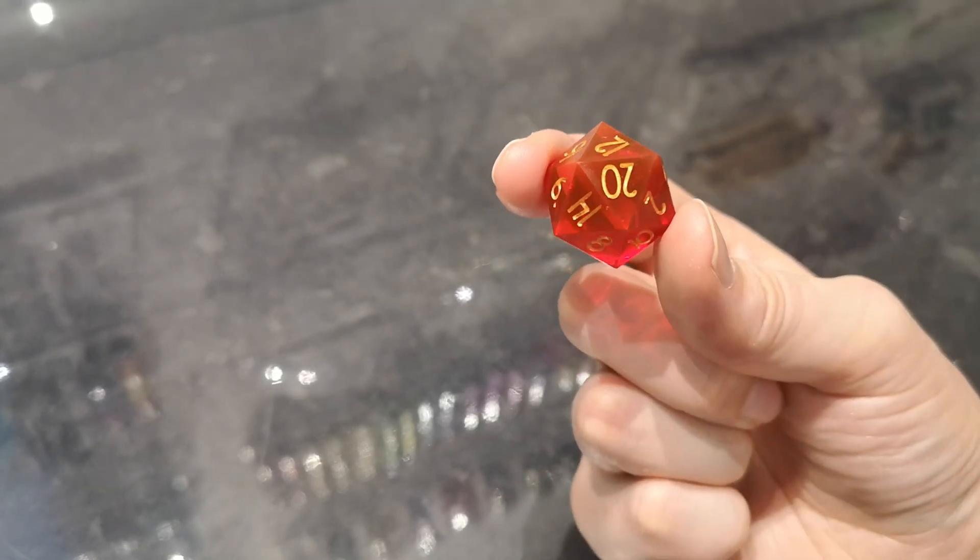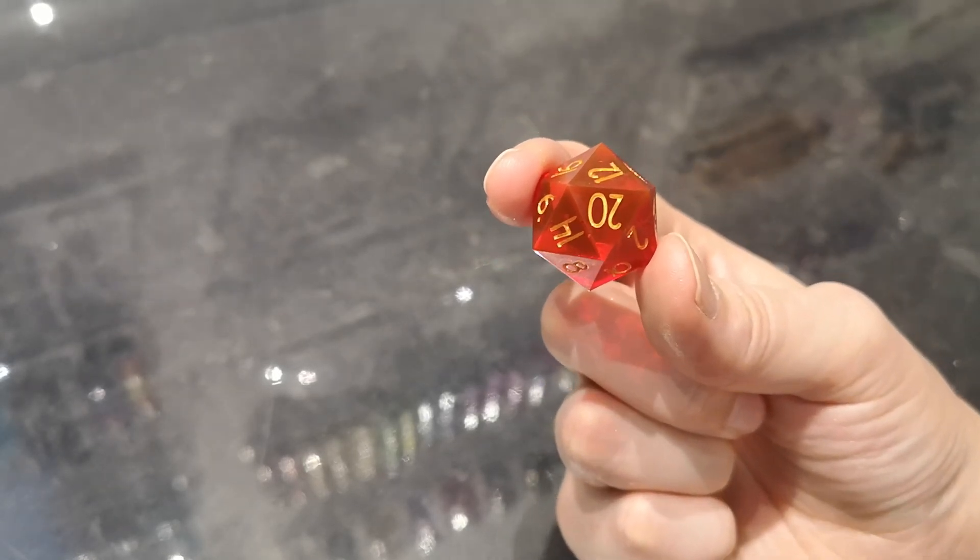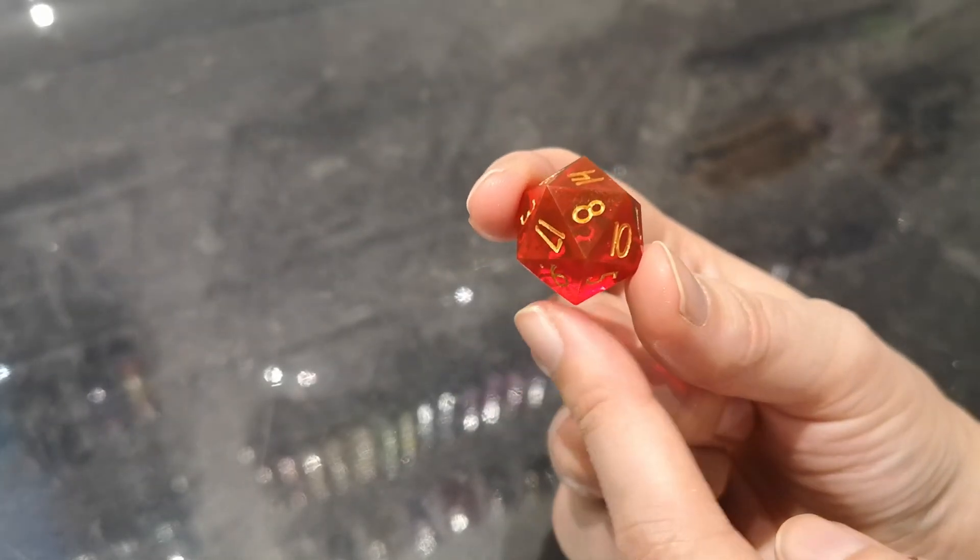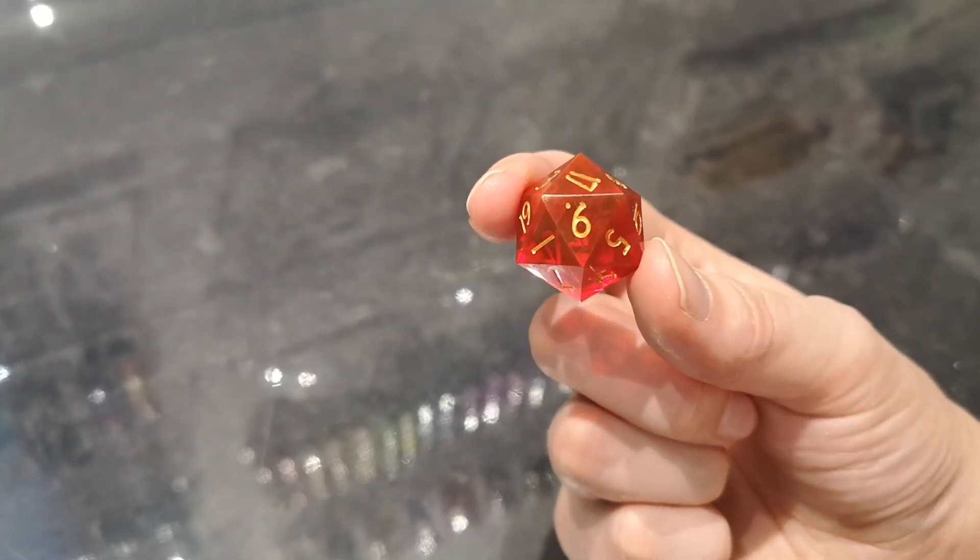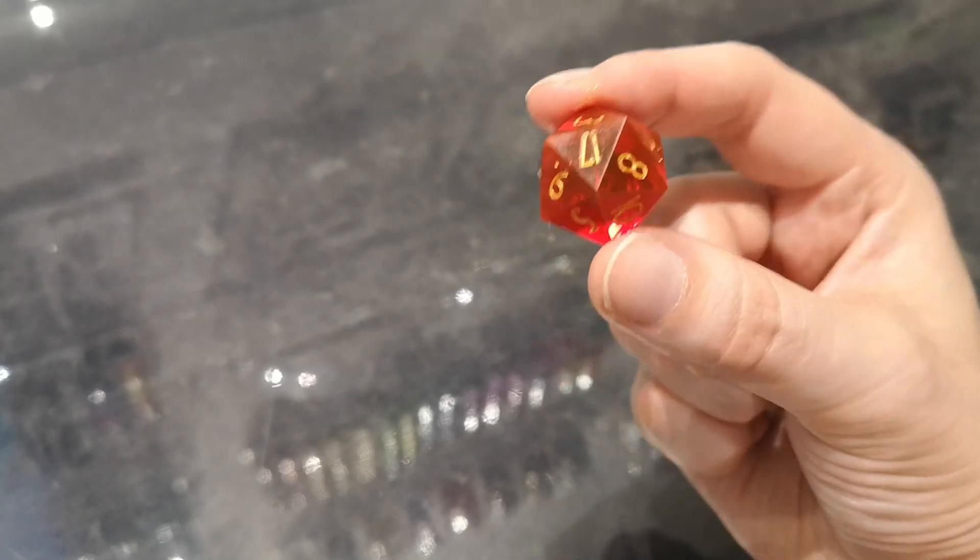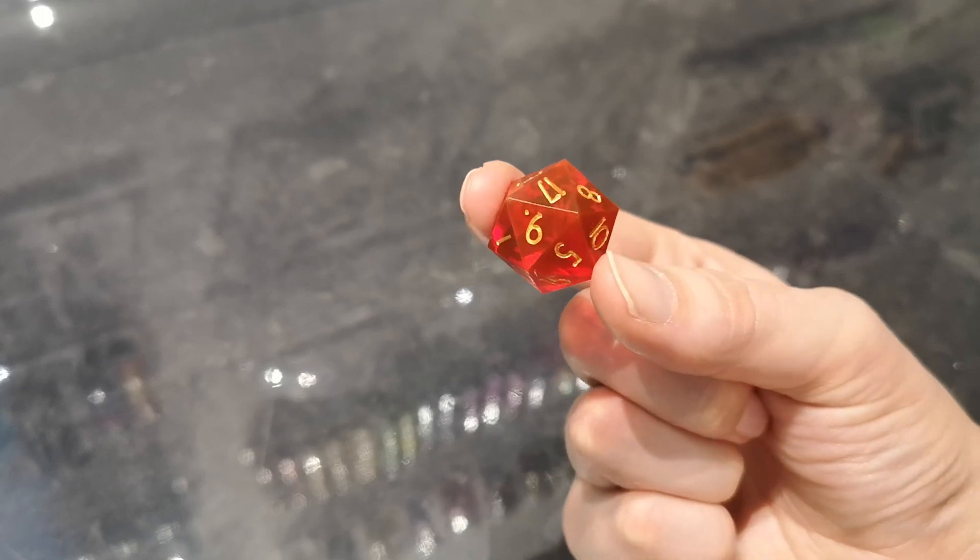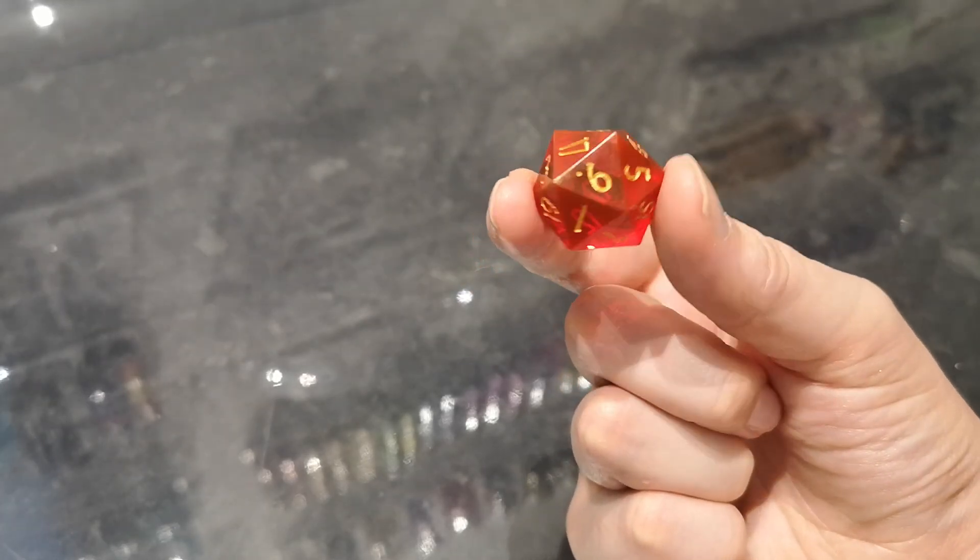Here's what we're going to be making today in project two of the Teeth Things Dice Making Kit. If you don't have the kit you can follow these projects along no problem and just buy your own supplies, everything will be readily available. We're going to be making this nice translucent red die with gold inking as our first dice making project.